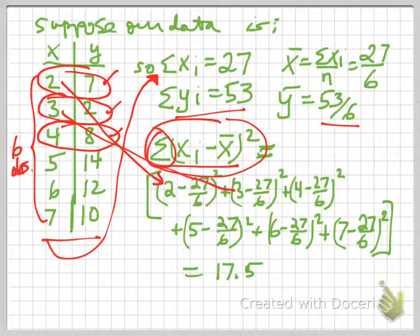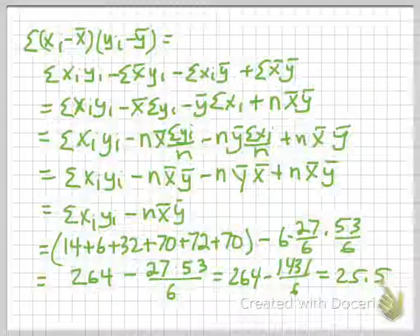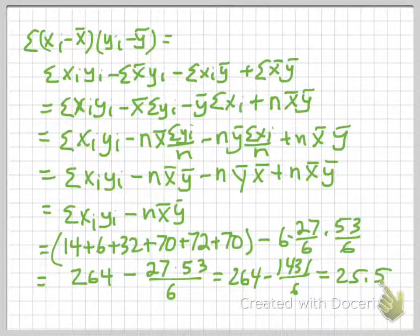...you can use your calculator, or easier to plug it into Excel. You'll get approximately 17.5. I've done a little rounding there. Let's go on to our next term. Oh my goodness, look at this mess. xi minus x-bar times yi minus y-bar.